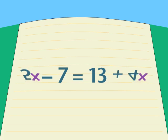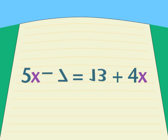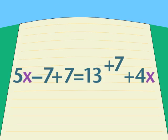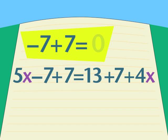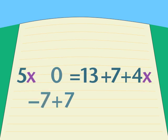I want all x's on one side, all numbers to the other. To move negative 7, I add positive 7 to both sides, and negative 7 vanishes on the left and reappears as positive 7 on the right.